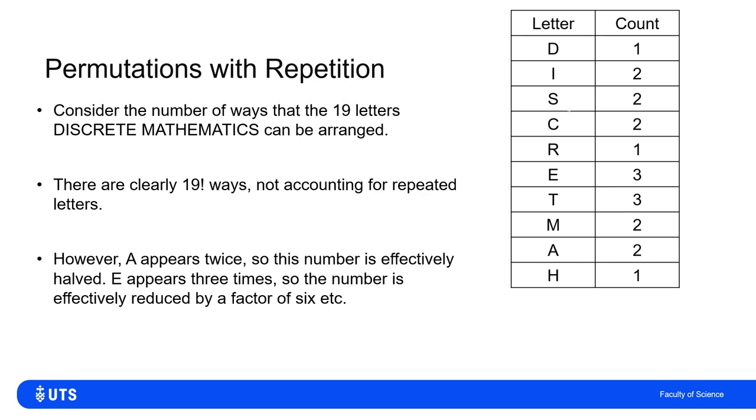So if I work out how many times each letter appears, there's one D, two I's, two S's, two C's, and so on.